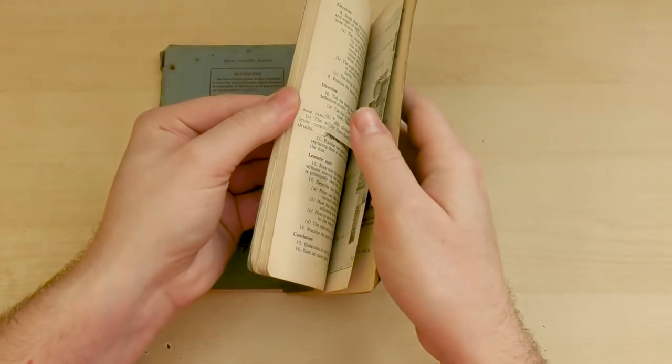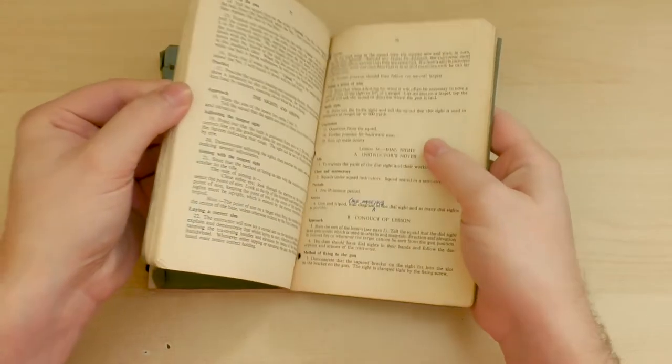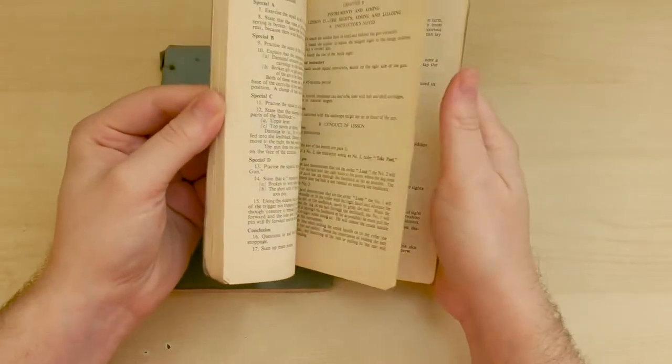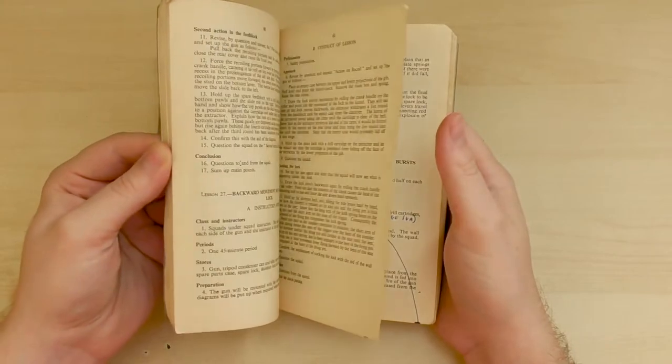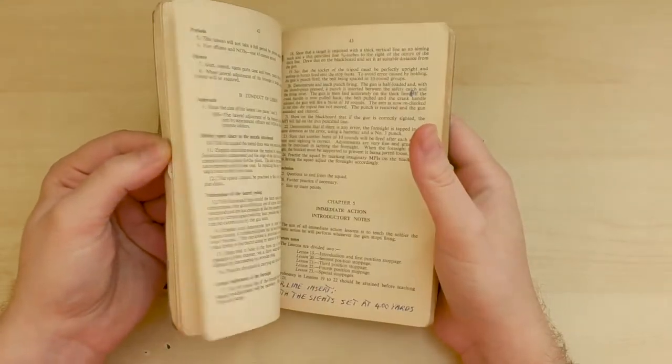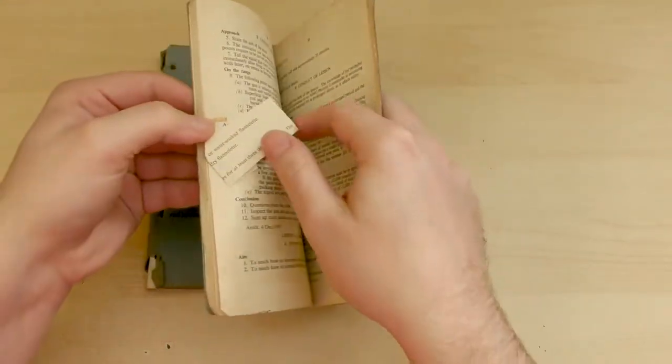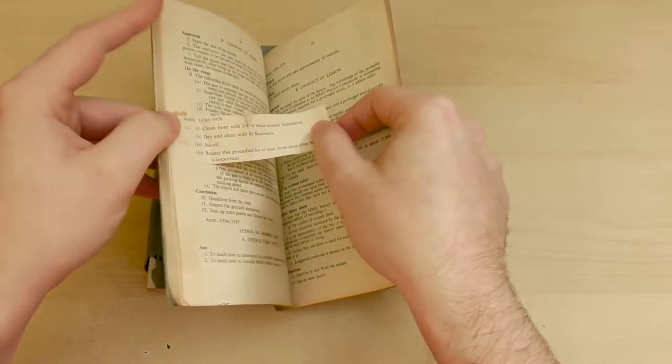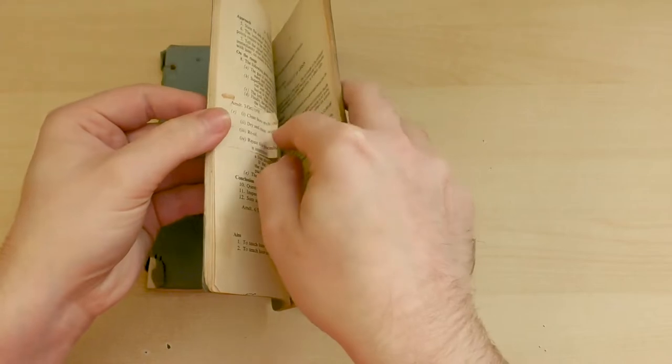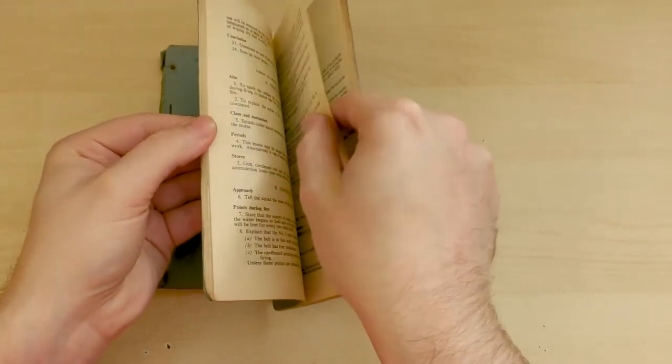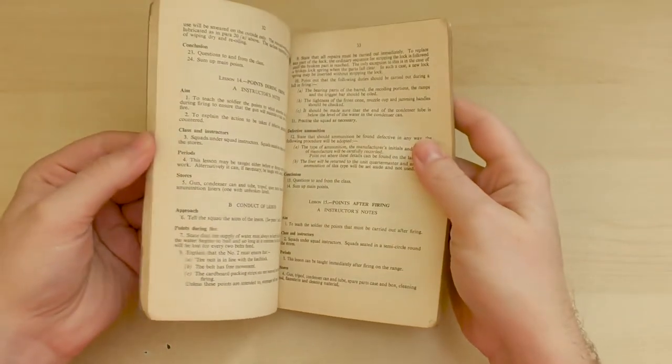You see sometimes people have just tucked the amendment sheets in the back. So they can be quite loose, so you have to be really careful with them, because they're over 60 years old now at this point. Pasted in with glue and water probably, or flour and water.